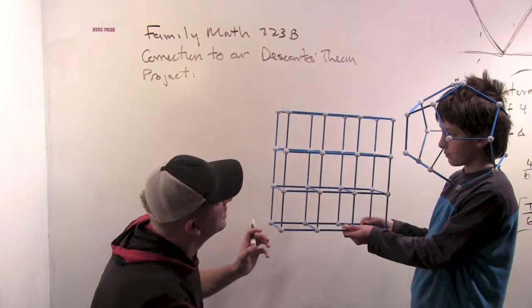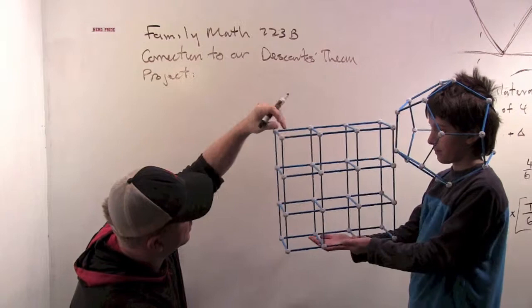So we have eight corners on the outside, right? Yeah. These ones don't count because they're not corners.